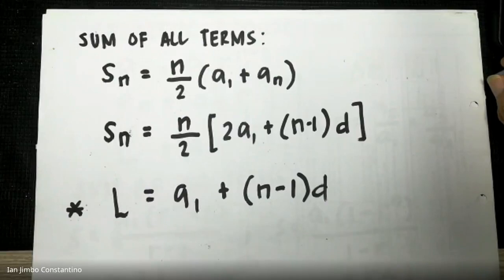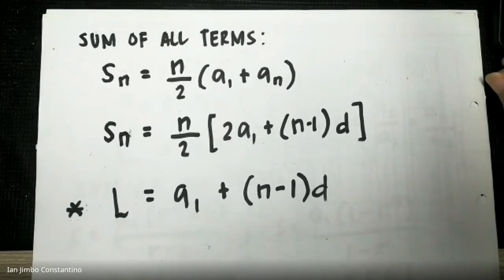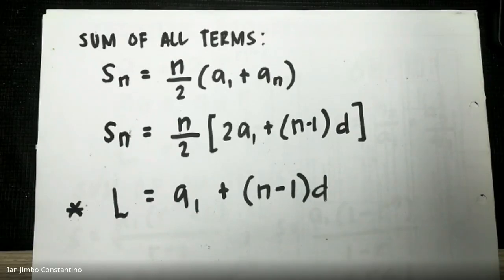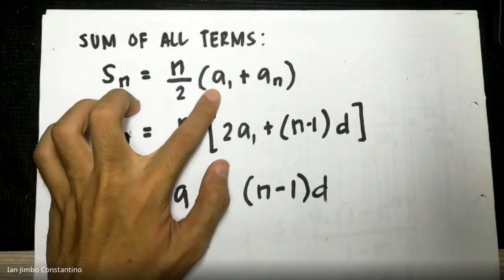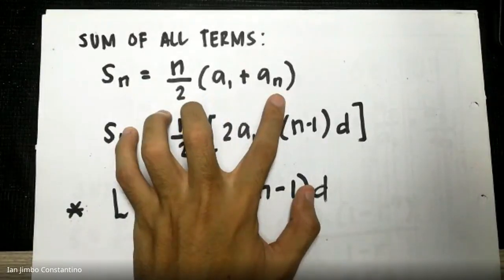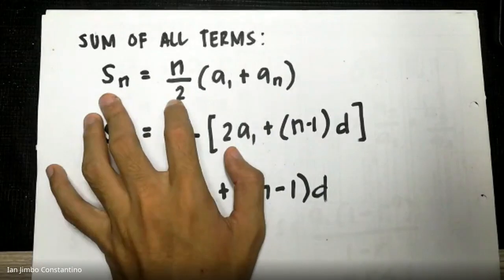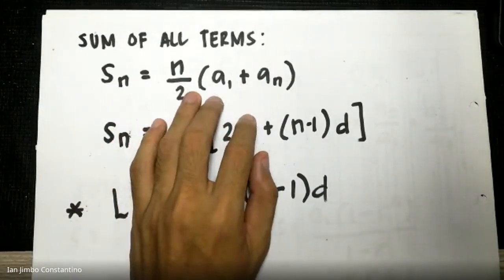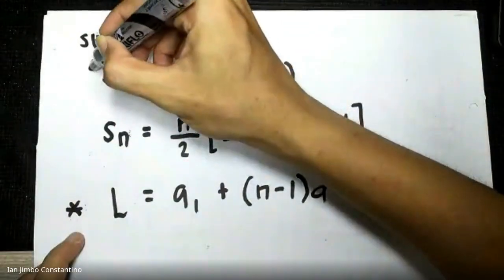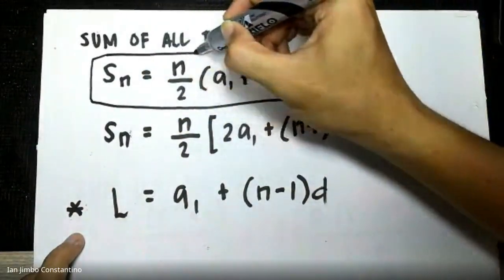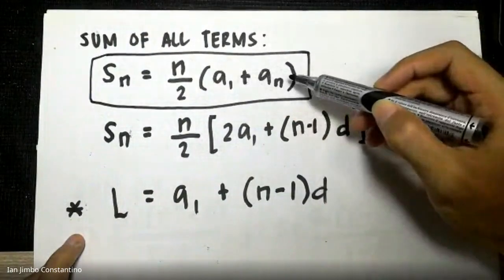Mr. Paking thought the professor was crazy, but said he could find the sum of one to one hundred easily. He just needed the first term and the last term of the sequence, multiply by the number of terms — one to one hundred means one hundred terms — and he quickly got the sum of all terms. So Mr. Paking devised the formula: the sum of all terms for an arithmetic sequence equals n over 2, multiplied by the sum of the first term and the last term of your sequence.